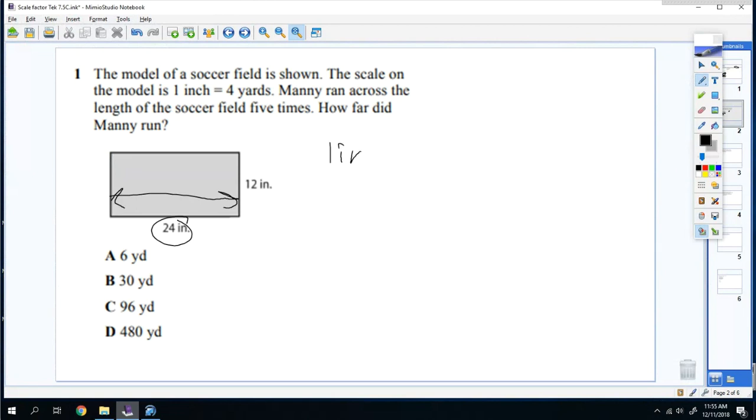So for every one inch it is four yards. 24 inches go on top or X. So you do 24 times 4 which is 96. But that's only one time. He ran 96 yards five times. So you're going to do 96 times 5 which is 480.